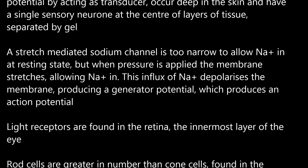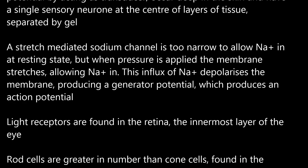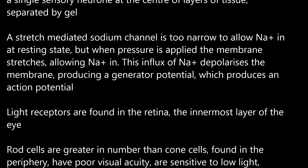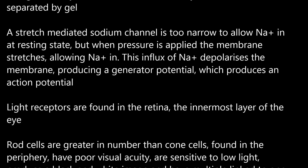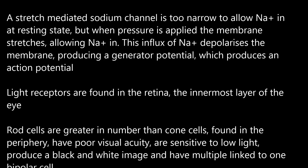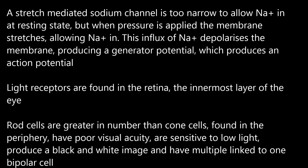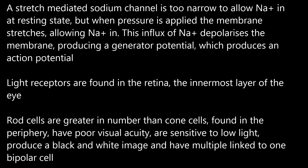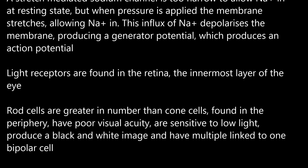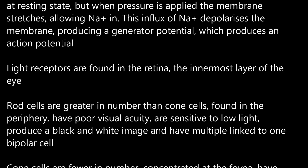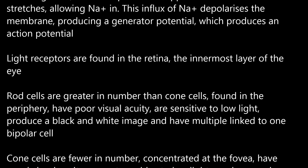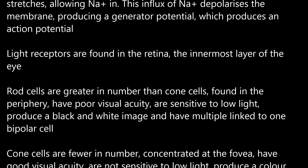Light receptors are found in the retina, the innermost layer of the eye. Rod cells are greater in number than cone cells, found in the periphery, have poor visual acuity, are sensitive to low light, produce a black and white image, and have multiple rods linked to one bipolar cell.